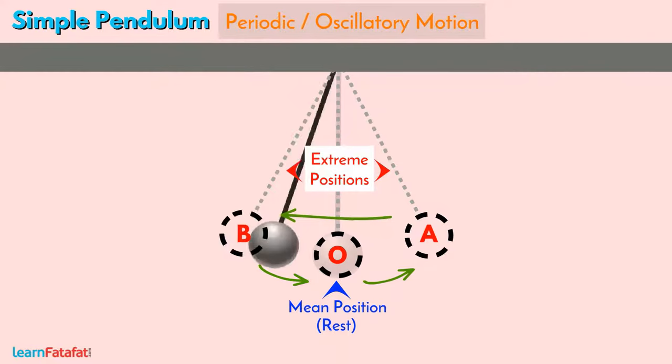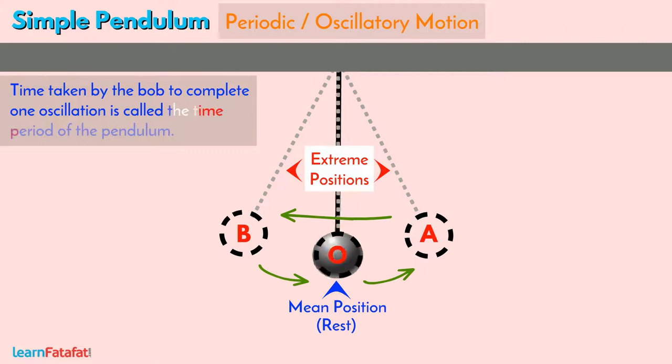The time taken by the bob to complete one oscillation is called the time period of the pendulum. We measure the time period by measuring the time required to complete an oscillation from the extreme position. It is difficult to measure the time period in one go. Here is a method to measure the time period of the pendulum.